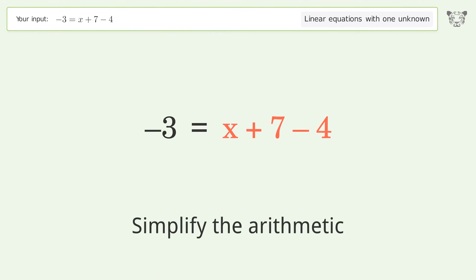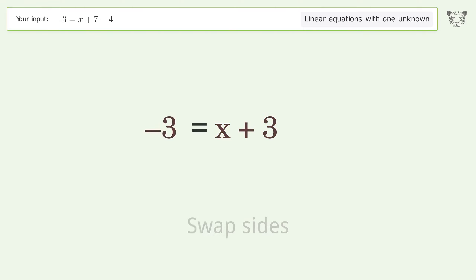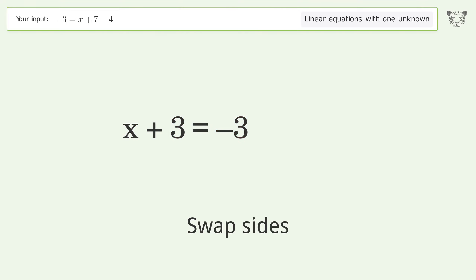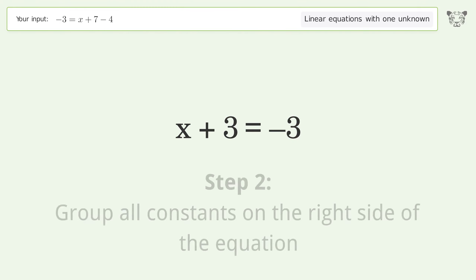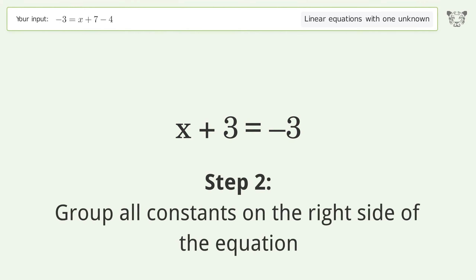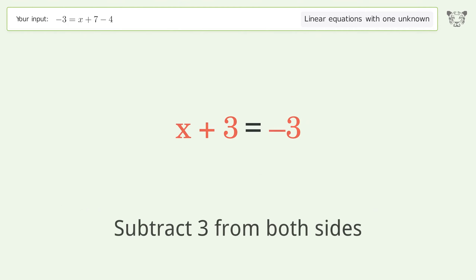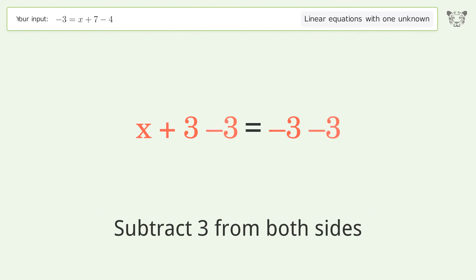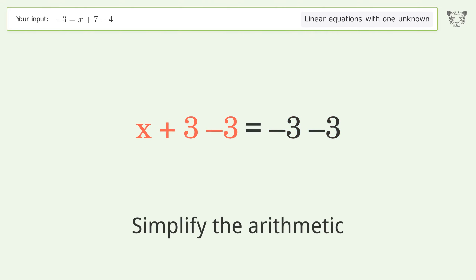Simplify the arithmetic. Swap sides. Group all constants on the right side of the equation — subtract 3 from both sides. Simplify the arithmetic.